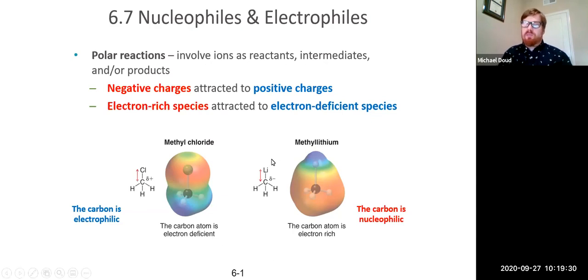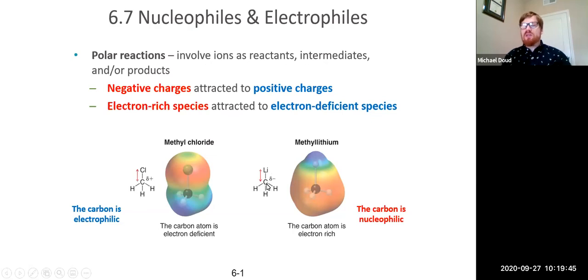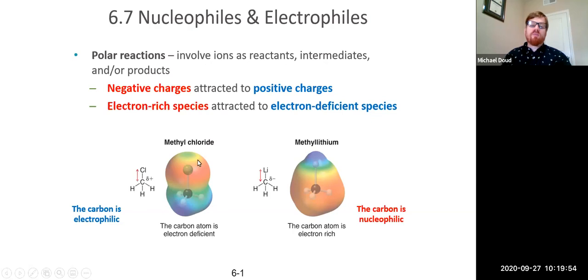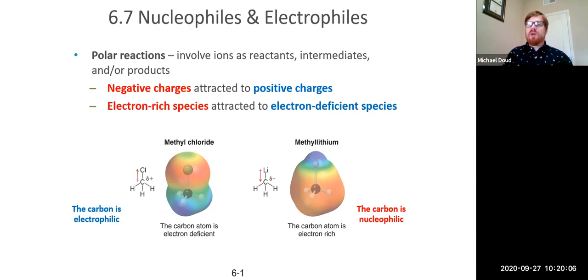Another example is a lithium-carbon bond. Lithium is much less electronegative than carbon, so carbon pulls the electron density to it, almost forming an ionic bond where the negative charge is localized on the carbon. So you have a partial negative charge on this carbon and a partial positive charge on the lithium. We call this partial positive area electrophilic.